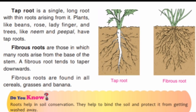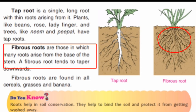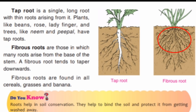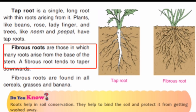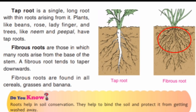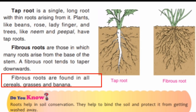In fibrous roots, many roots arise from the base of the stem. Fibrous roots are found in all cereals, grasses, and banana plants.